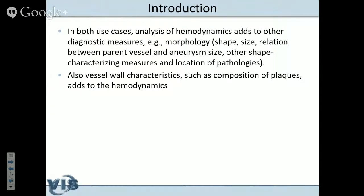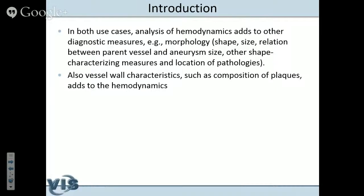Vascular pathologies are also characterized by specific biology — something happens at the cellular level. Understanding the vessel wall and the composition of plaques in coronary vessels is also important. I will focus here on hemodynamics and the flow, but the bigger picture includes wall characteristics and morphology. What is a cerebral aneurysm? There is a weakened vessel wall that leads to an enlarged vascular structure, with a high risk of rupture depending on the particular size and shape. When rupture happens, almost half of the patients die, and the others are severely impaired.